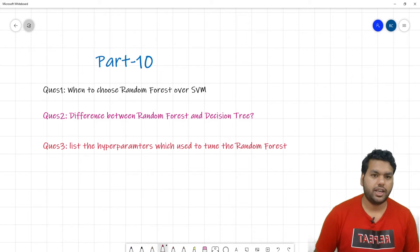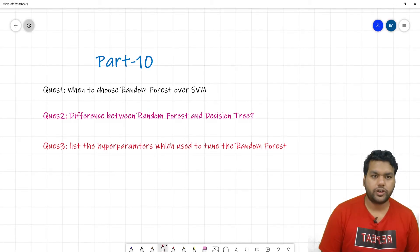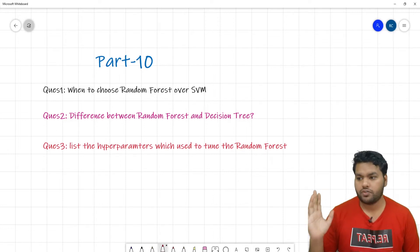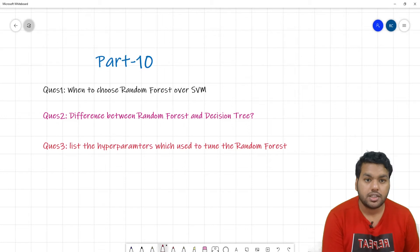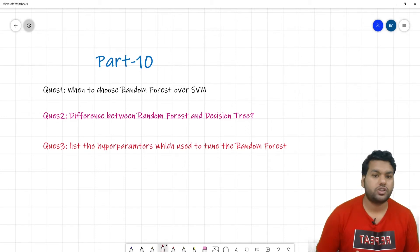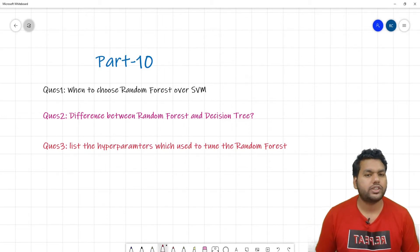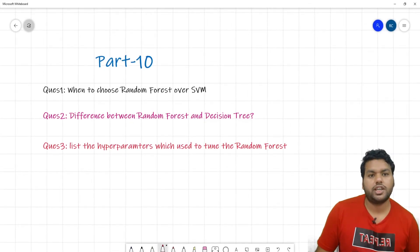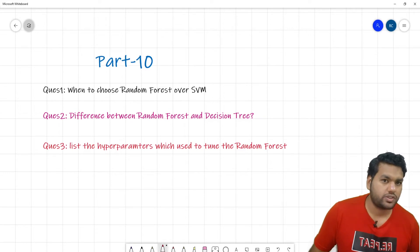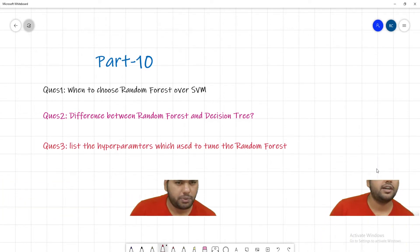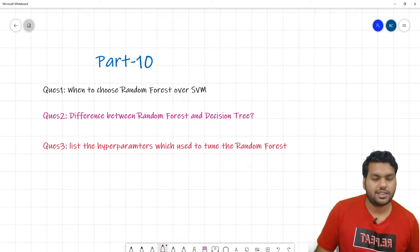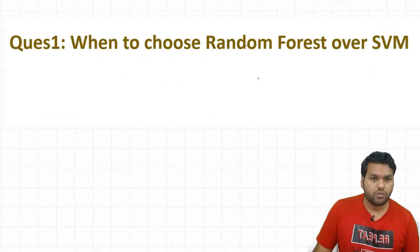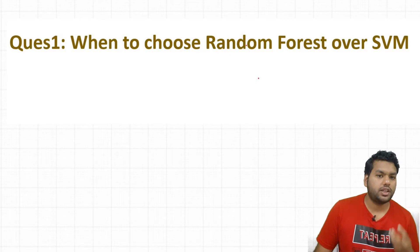Hello guys, welcome to my YouTube channel. I am Krishna Gapan. In this video we're going to talk about Part 10 of our interview questions. We're going to discuss three questions: when to choose a random forest over a support vector machine, what is the difference between random forest and decision tree, and which hyperparameters help tune random forest. These are questions generally asked in service-based companies for data science interviews.